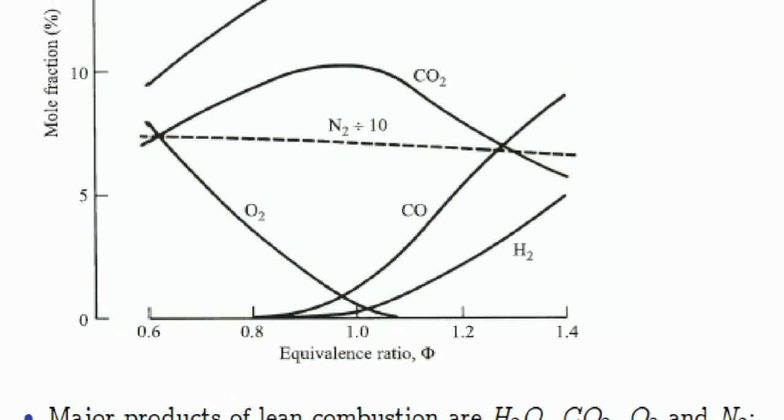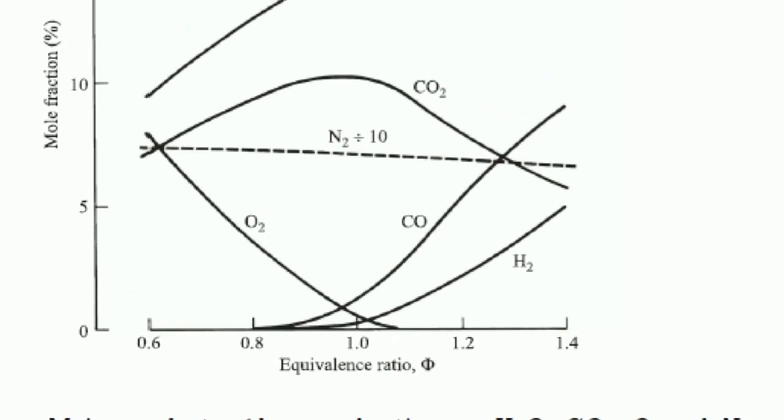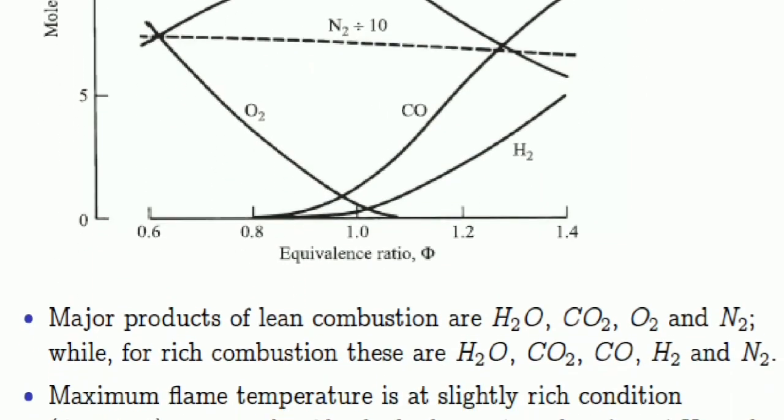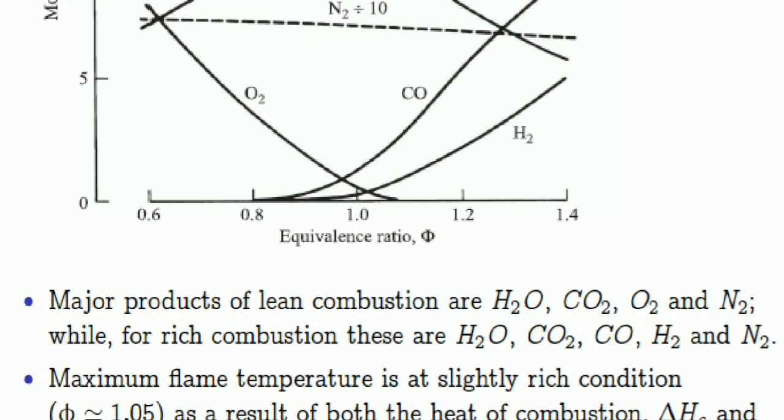There are different lines for hydrogen, oxygen, carbon monoxide, carbon dioxide, water, etc. Major products of lean combustion are H₂O, CO₂, O₂, and N₂, while for rich combustion these are H₂O, CO₂, CO, H₂, and N₂. Water, carbon dioxide, and nitrogen are similar in both, where in lean combustion the major product is oxygen, and for rich combustion the major products are carbon monoxide and hydrogen.